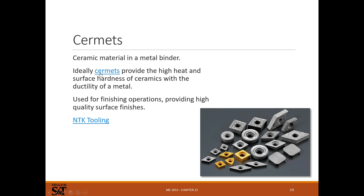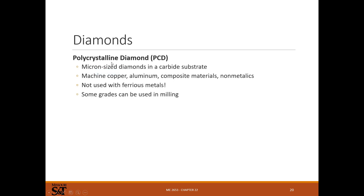Cermets are a composite of a ceramic and a metal binder — a composite material where you get the best of both worlds: hard little cutting edges bound together with metal, making the tool tougher. For polycrystal diamond, it's tiny diamonds on a carbide substrate. It's not used with ferrous metals — there may be a chemical reaction with iron — so it would be for machining non-ferrous metals. I've not actually encountered any polycrystal diamond tooling personally.